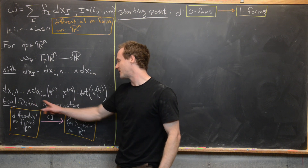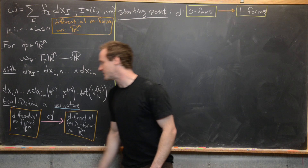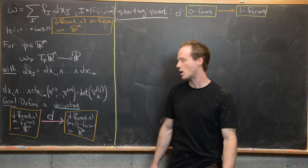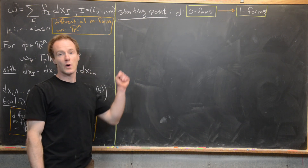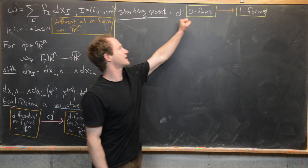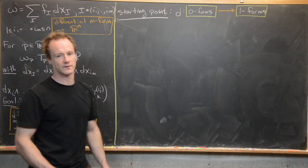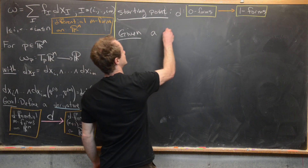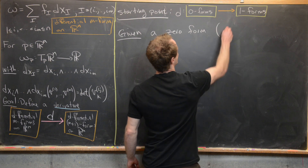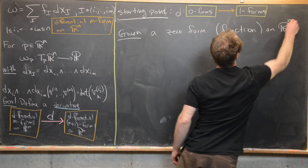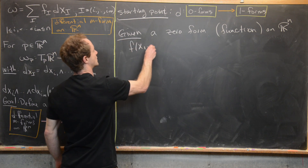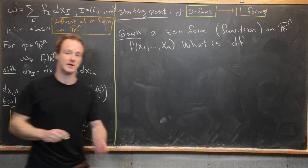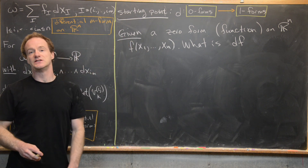Our goal for this video is to define a derivative that takes us from the space of differential M-forms on Rn to the space of differential M+1 forms on Rn. We start by looking at what it would take to go from 0-forms to 1-forms — really thinking about these as differential 0-forms to differential 1-forms. Given a 0-form, which is just a function f(x₁,...,x_n), we want to answer: what is dF?